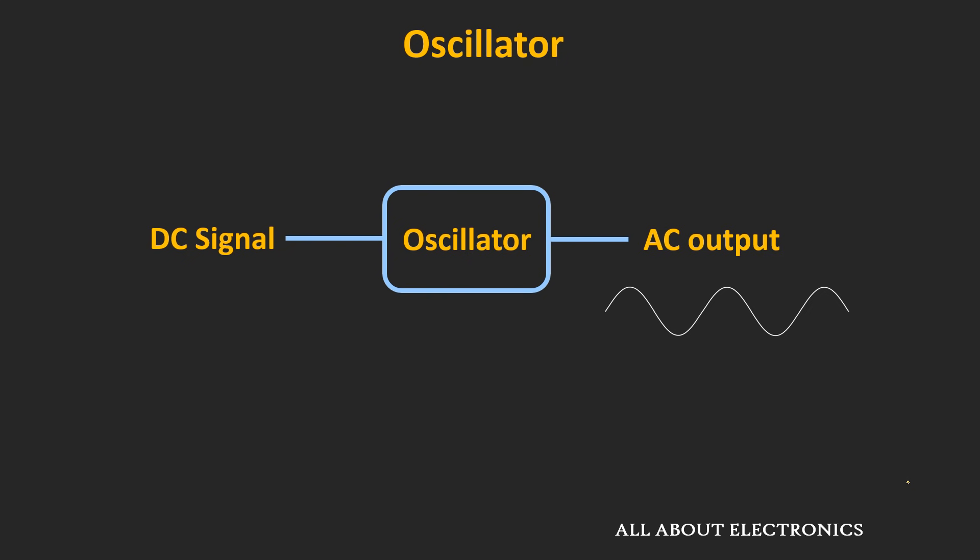Oscillators can generate frequencies from a few hertz to even gigahertz. The output of the oscillator can be either a sinusoidal signal or a non-sinusoidal signal like a square wave or a triangular wave.